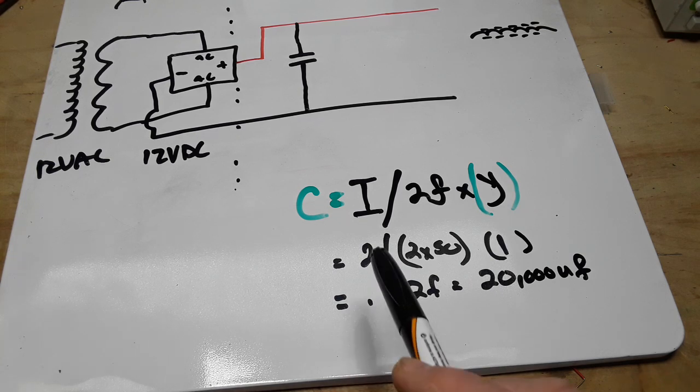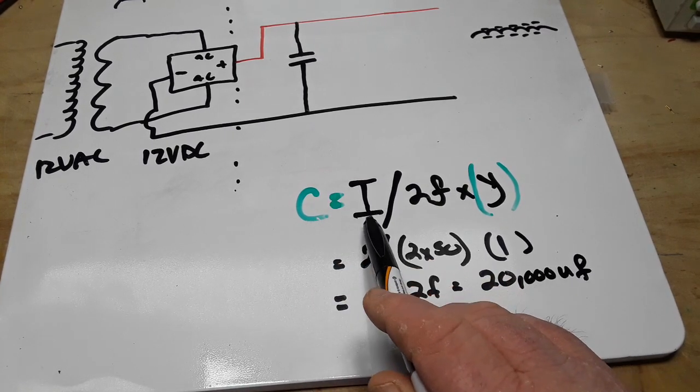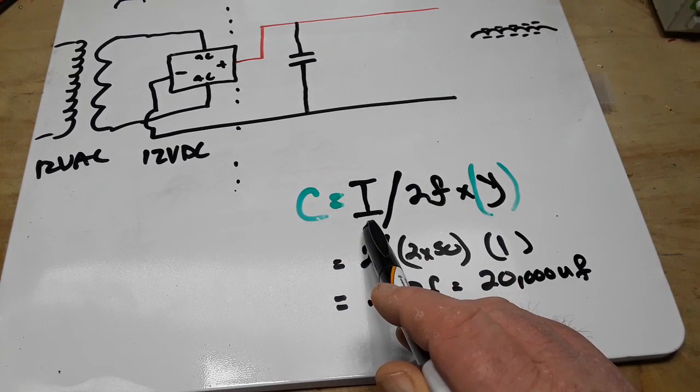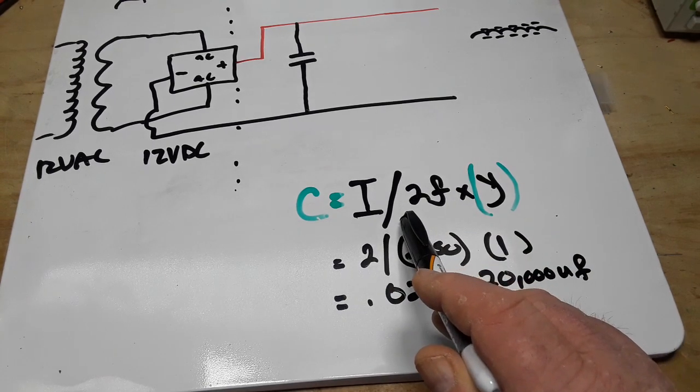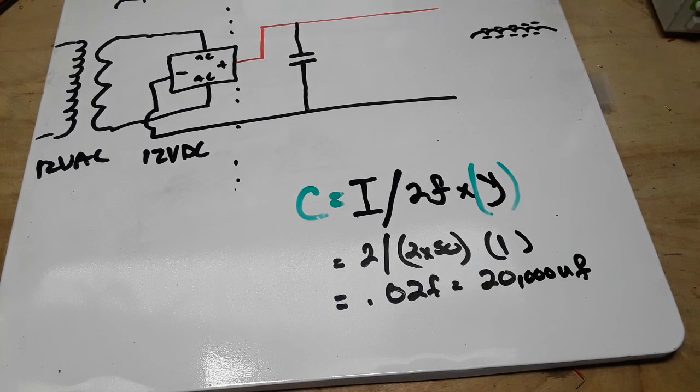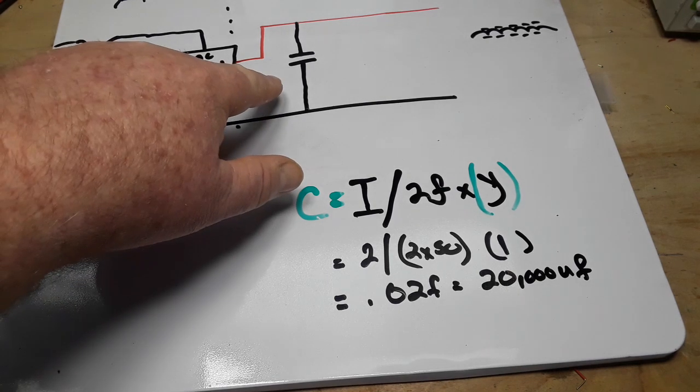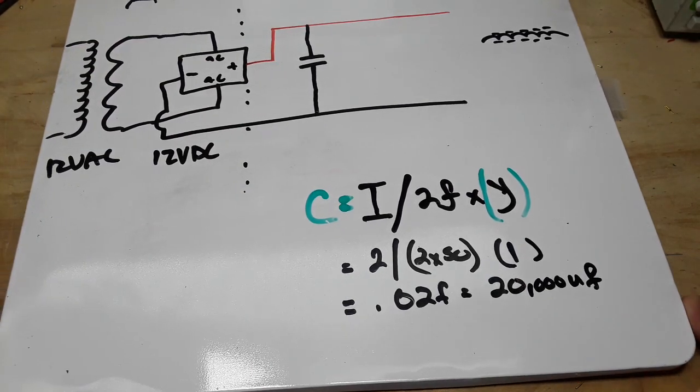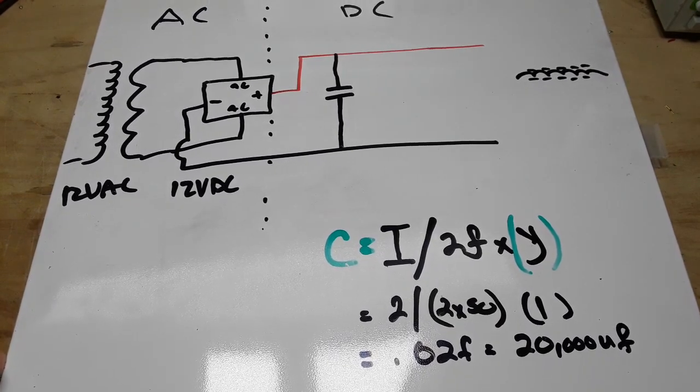That's the formula. Your capacitor equals your highest expected current divided by twice the frequency times your allowable peak-to-peak. And that's how you pick your smoothing or reservoir capacitor in a DC power supply.